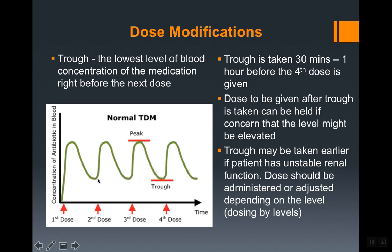The lowest point reached — the lowest amount of vancomycin in the blood before the second dose is given — is the trough. When the level is at its highest point, that is the peak. The trough is usually taken 30 minutes to one hour before the fourth dose, because we want to ensure the medication is at steady state, which typically takes about three doses to achieve.